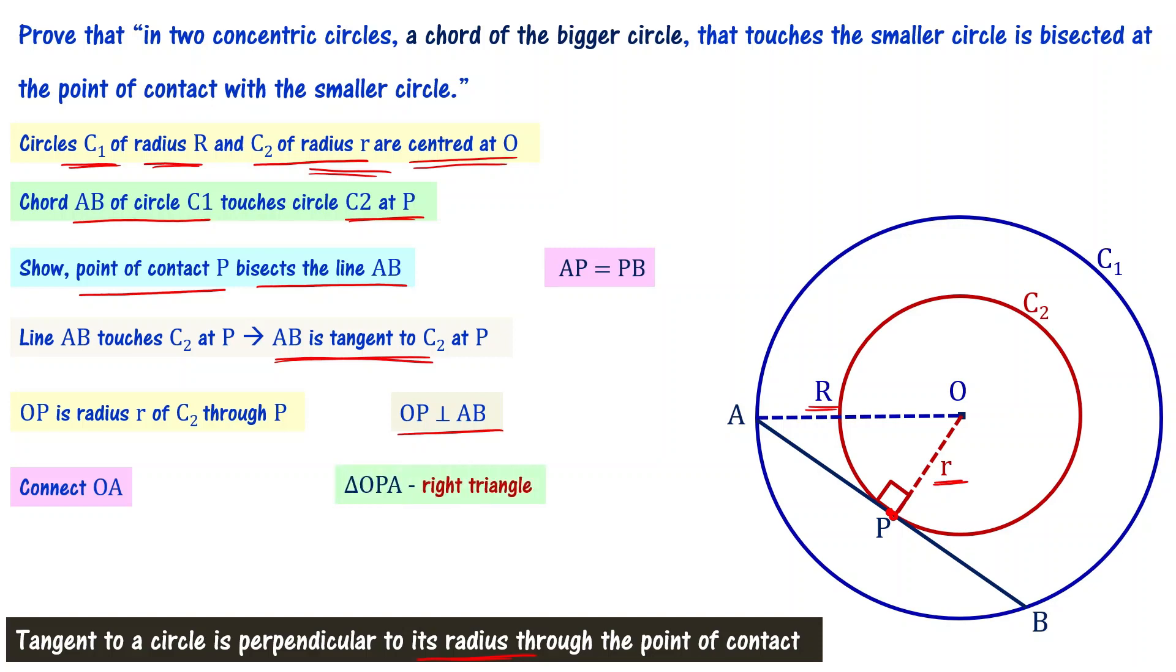For a right angle triangle, we apply Pythagoras theorem. Pythagoras theorem says the square of the hypotenuse is equal to sum of the squares of other two sides. For this particular triangle, the hypotenuse is OA. So OA square equals OP square plus AP square. This is Pythagoras theorem.